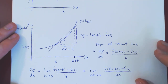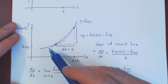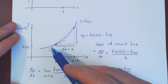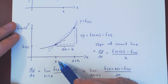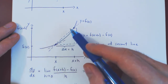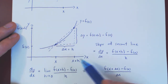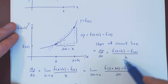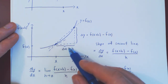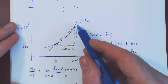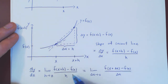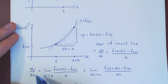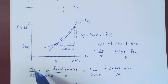Always remember geometrically: to find the slope of the tangent line to the curve at the given point, first find the secant line, find the slope of the secant line, and as you let h — the change in x — shrink to 0, the secant line will approach the tangent line. Therefore the slope of the secant line in the limit, as h goes to 0, will give you the slope of the tangent line, which is known as the derivative.